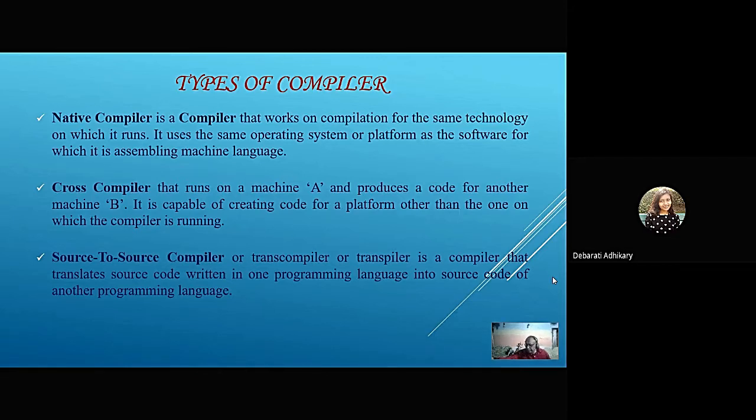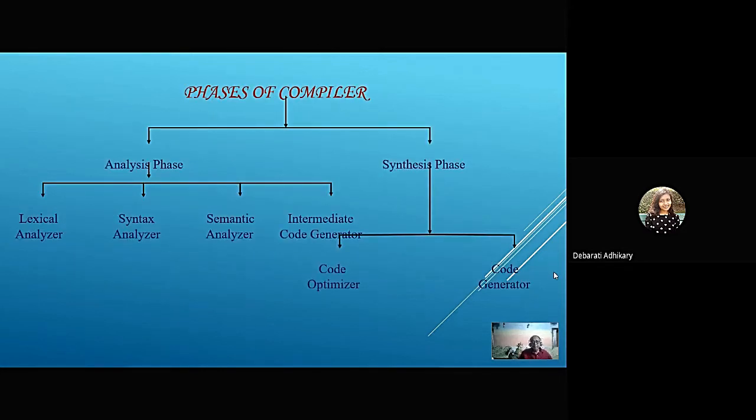Now we'll discuss the phases of compiler. There are two major phases: analysis phase and synthesis phase. The analysis phase is divided into four steps: lexical analyzer, syntax analyzer, semantic analyzer, and intermediate code generator. The synthesis phase is divided into two steps: code optimizer and code generator.